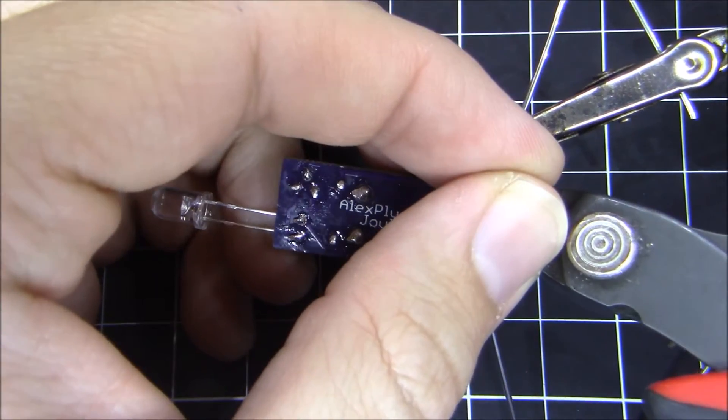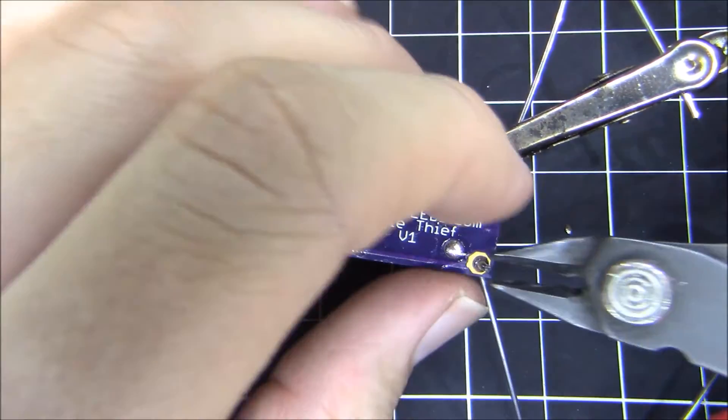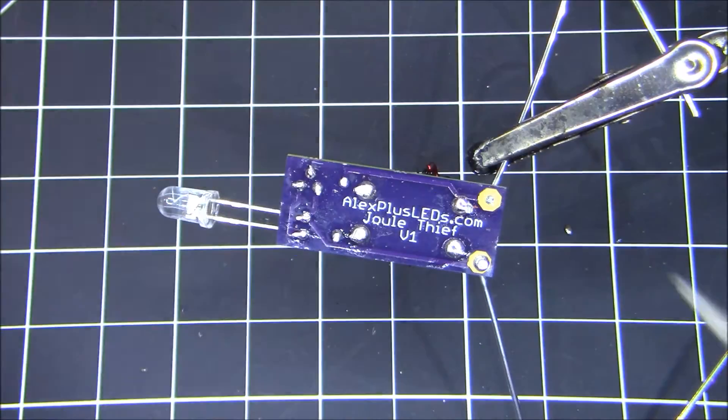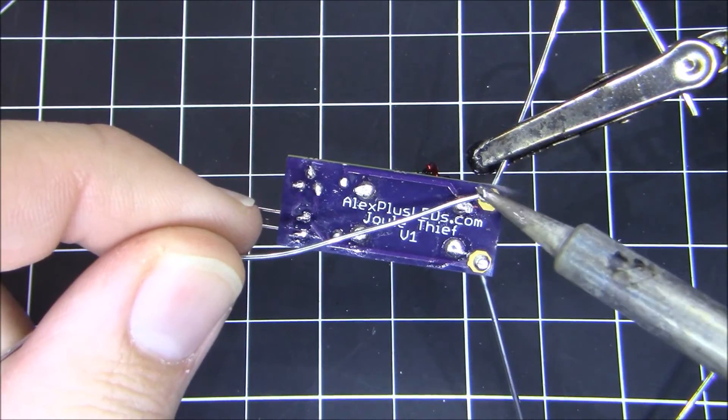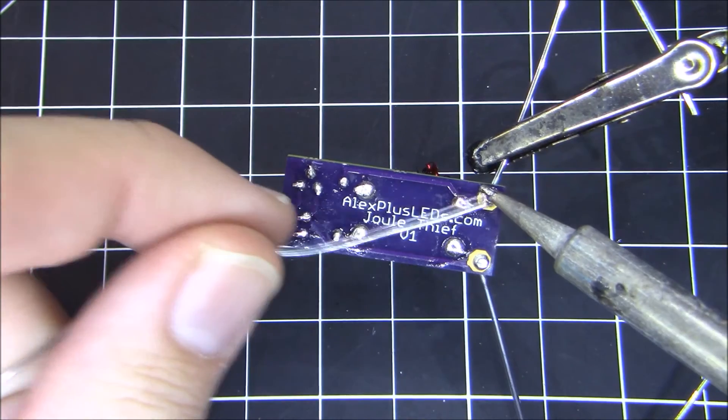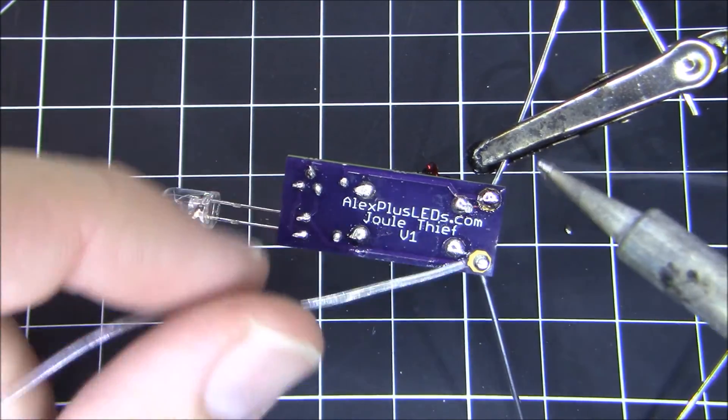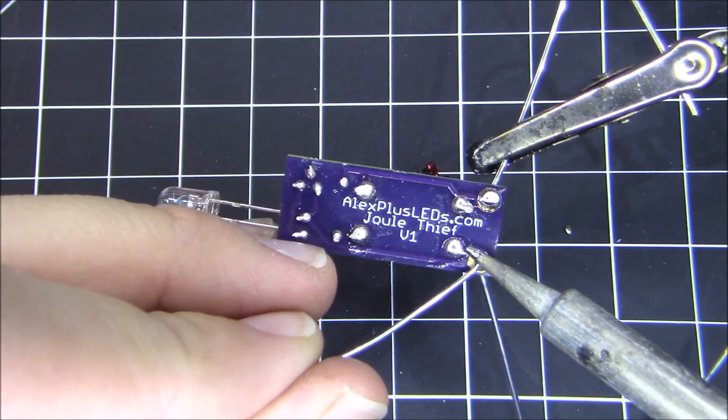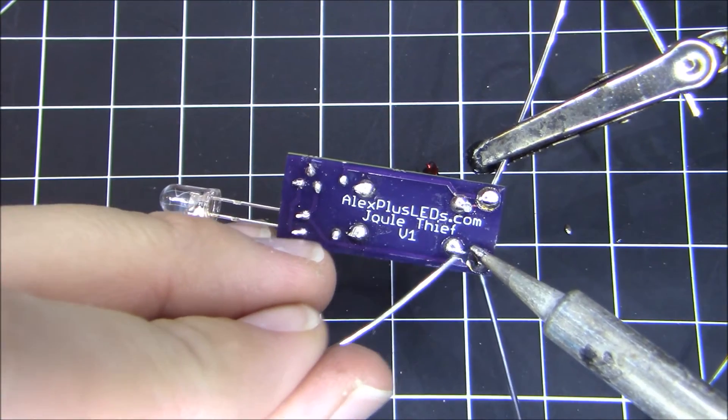we're going to trim off the last bits of paper clip on the reverse side of the PCB and solder that up so that it is nice and tidy. Make sure you don't add too much heat or else the paper clip might move. Just lightly heating these pads.